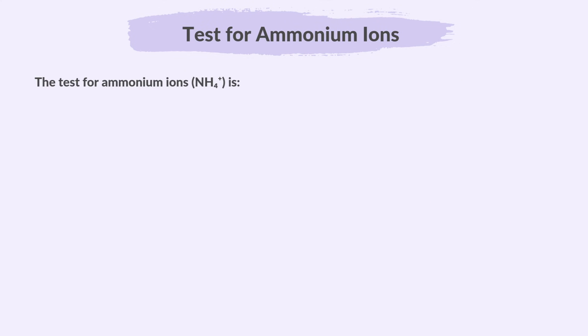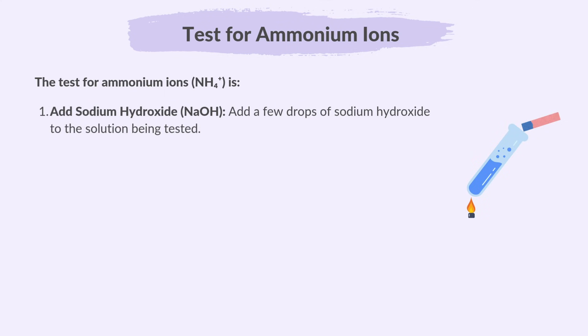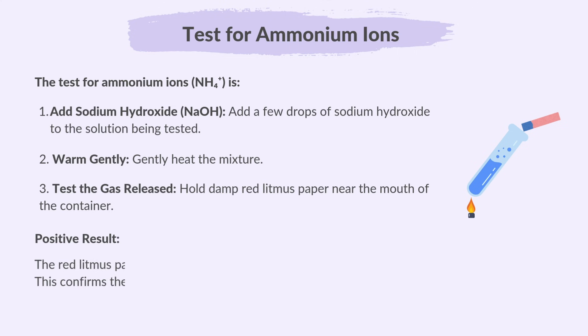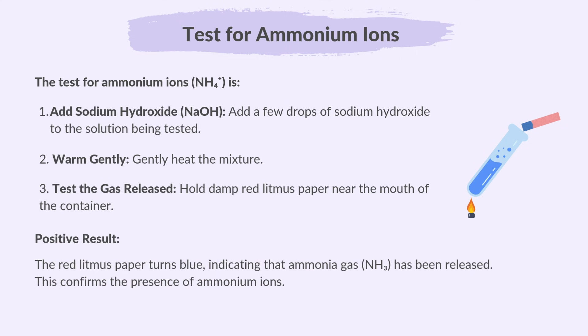To test for ammonium ions, add a few drops of sodium hydroxide to the solution being tested and gently heat the mixture. Hold damp red litmus paper near the mouth of the container. The red litmus paper turns blue, indicating that ammonia gas has been released, confirming the presence of ammonium ions.